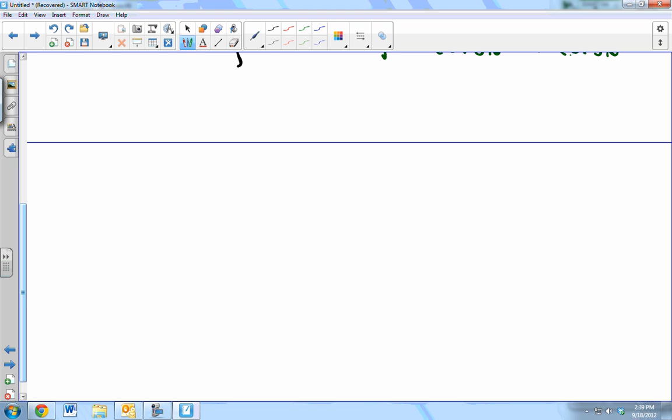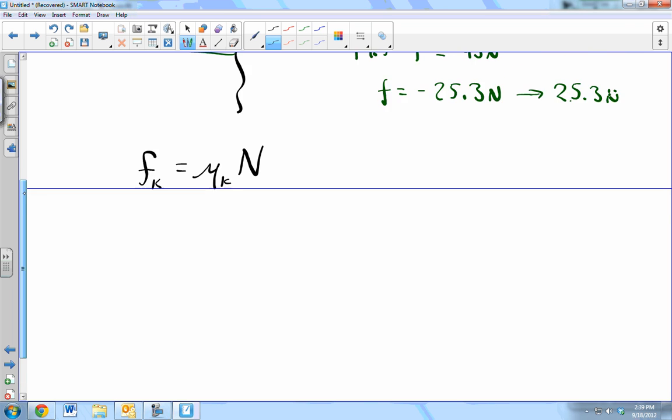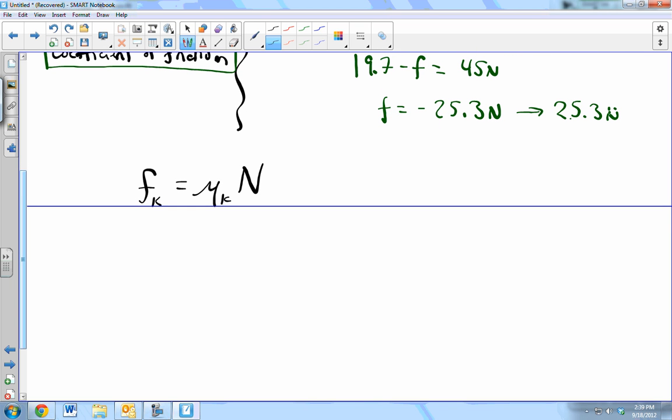Remember the equation that has coefficient of friction in it? Mu. Mu times the normal force. So in order to solve for the coefficient of friction here, we need to know what friction is. And we need to know what the normal force is. Do we know either one of those? We know the friction. We just solved for it.